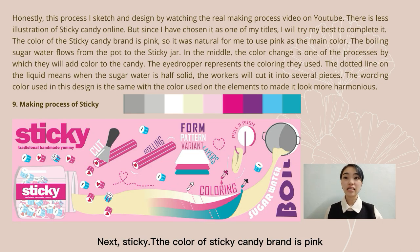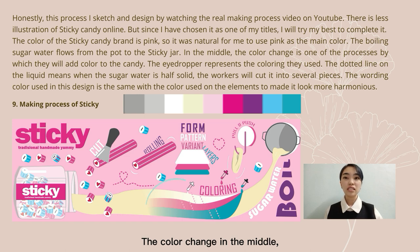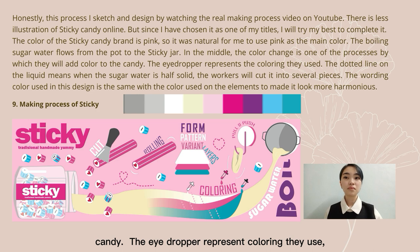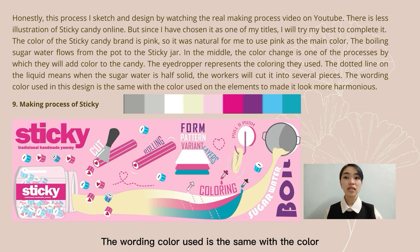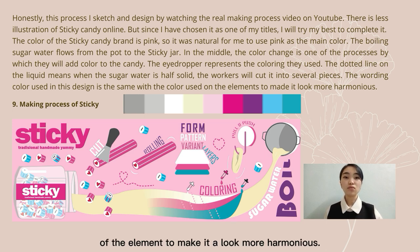Next, sticky candy. The colour of sticky candy blend is pink, so I use pink as the main colour. The colour change in the middle represents one of the processes by which they add colour to the candy. The eyedropper represents the colouring they use. The dotted line on the liquid means the workers will cut it into several pieces. The wording colour used is the same as the colour of the element to make it look more harmonious.